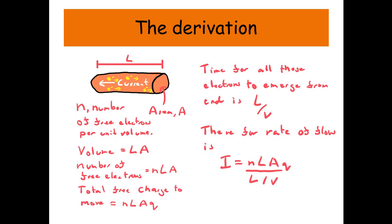Now if you see, we've got the L's on the top and the bottom, so they obviously cancel. And then V can go to the top. And that leaves me with I equals A, N, V, Q.